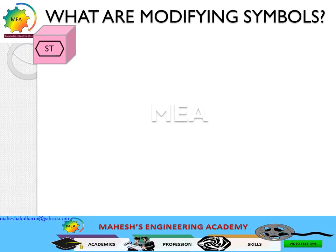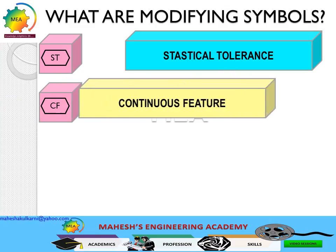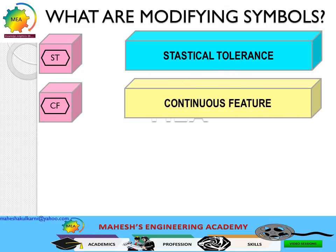The next symbol is ST, standing for statistical tolerance. When a dimension is specified with ST and called in the feature control frame, the dimension is controlled statistically using SPC — Statistical Process Control. The continuous feature symbol is used when a feature of size breaks and continues again.